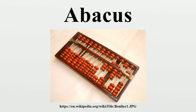The earliest known written documentation of the Chinese abacus dates to the 2nd century BC. The Chinese abacus, known as the Suanpan, is typically 20 cm tall and comes in various widths depending on the operator. It usually has more than seven rods. There are two beads on each rod in the upper deck and five beads each in the bottom for both decimal and hexadecimal computation. The beads are usually rounded and made of hardwood. The beads are counted by moving them up or down towards the beam — if you move them toward the beam, you count their value; if you move away, you don't count their value. The Suanpan can be reset to the starting position instantly by a quick movement along the horizontal axis to spin all the beads away from the horizontal beam at the center.